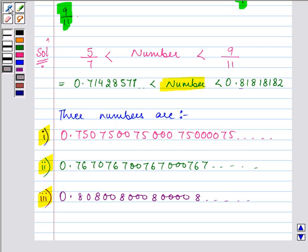There can be many more numbers that you can think of. But it should be more than 0.714 and so on and less than 0.80 and so on.